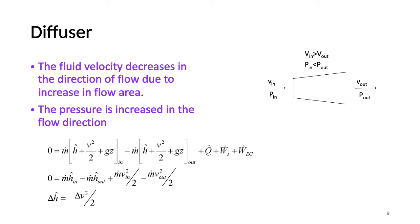Diffusers. Diffusers are the opposite of nozzles. The fluid velocity decreases in the direction of flow due to the increase in flow area while pressure is increased. We can apply the steady state energy balance to the diffuser. Potential energy changes are negligible along the flow. No heat transfer, no expansion contraction work and no shaft work.